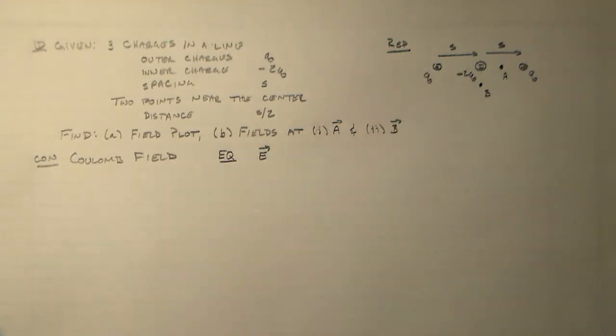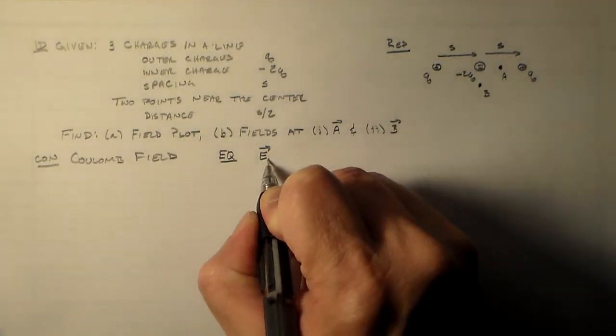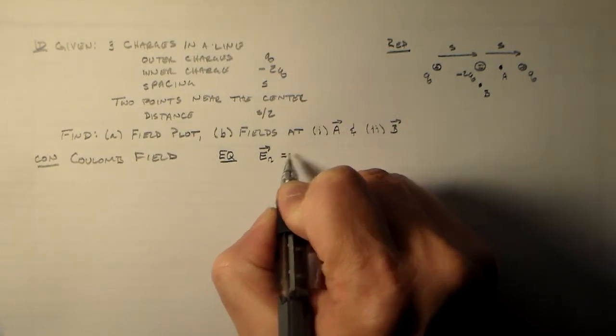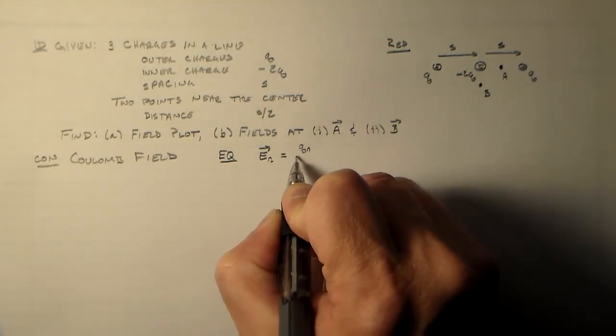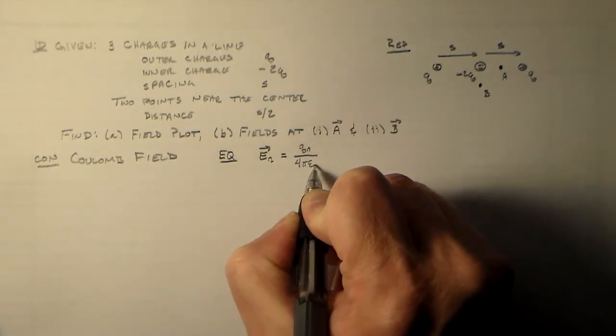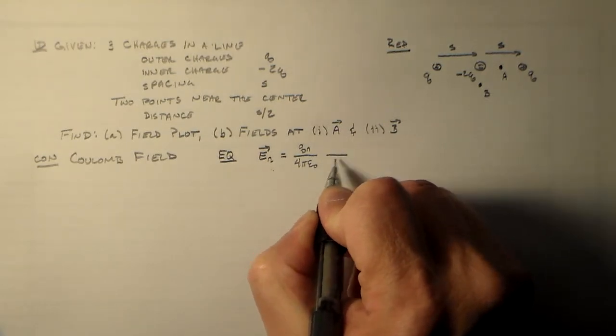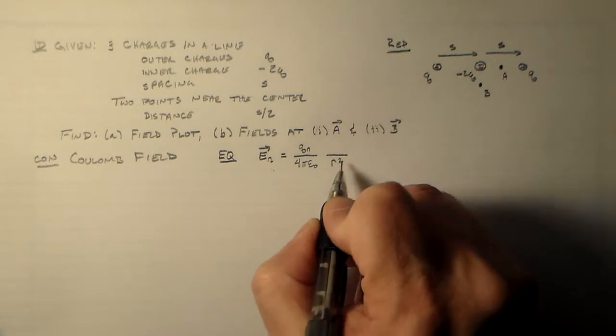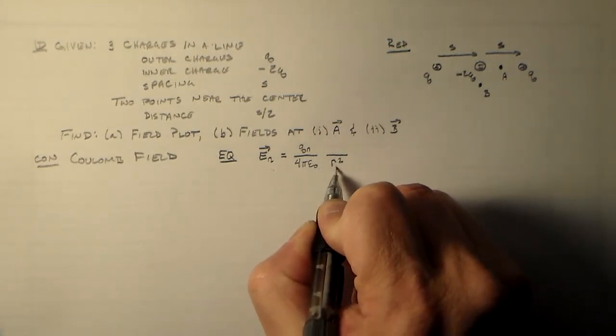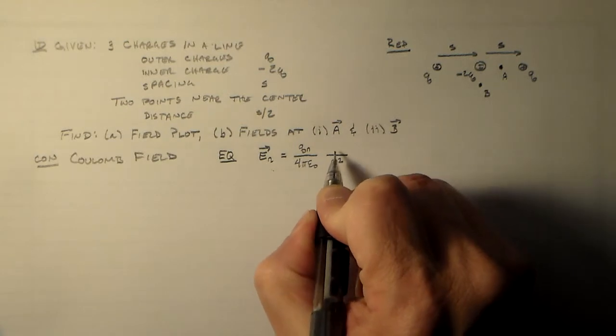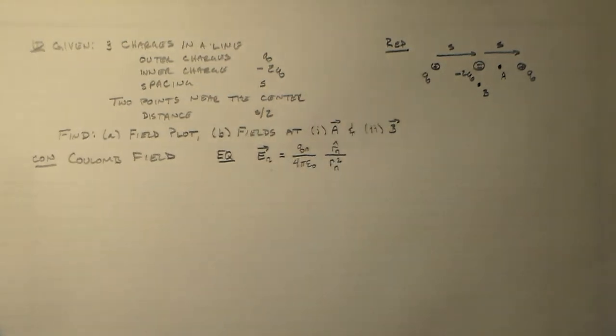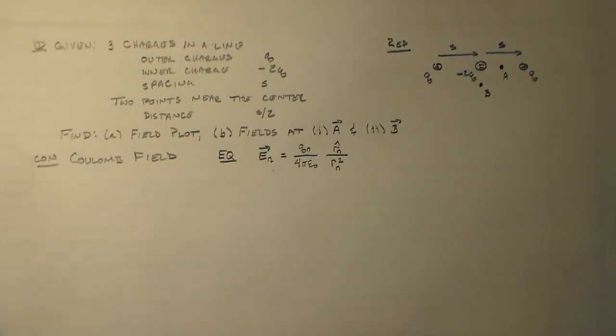And we may as well write what we mean by that as far as the equation. So that's a field from a particular charge, from a point charge, is equal to the charge on that point charge multiplied by a constant, which is 1 over 4 pi epsilon naught, divided by the square of the distance between the point and wherever N is, and our r hat in the direction. That's just the same thing that we keep doing over and over again.